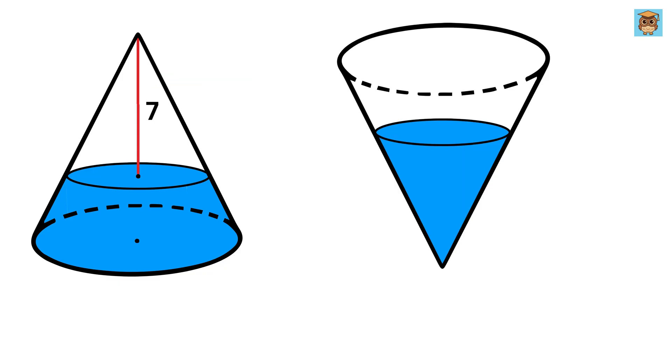Now I take this cone and flip it, so that the water will move around and settle like this, such that now the height of this empty space is 3 units.